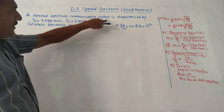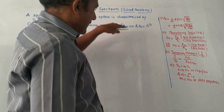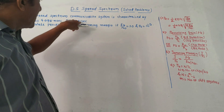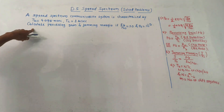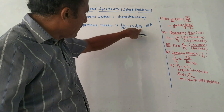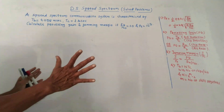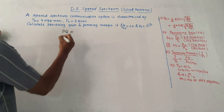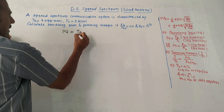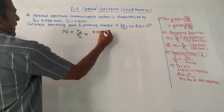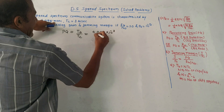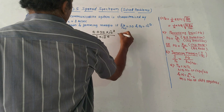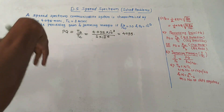Next problem: A spread spectrum communication system is characterized by bit duration TB of 4.095 milliseconds and chip duration TC of 1 microsecond. Calculate processing gain and jamming margin if EB by N0 is 10 and probability of error is 10 raised to minus 5. This is a straightforward numerical. First let us calculate PG, that is processing gain. Using the formula TB upon TC: it is 4.095 into 10 raised to minus 3 upon 10 raised to minus 6, which gives 4095.